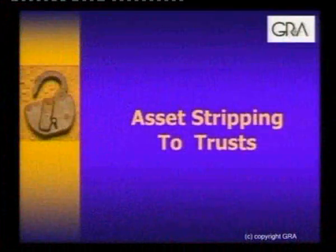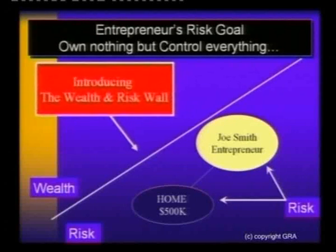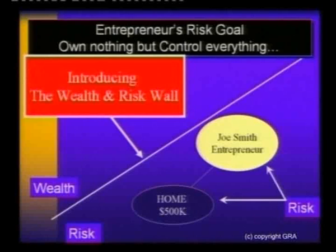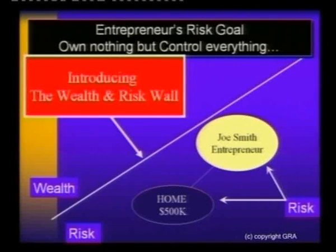What I want to do is spend a few minutes and go through asset stripping to trusts. The first thing we're going to do is introduce this concept of the wealth and risk wall. You can see this diagonal white line. On the left hand side we store wealth, and on the right hand side we carry risk. As individuals, you will always be on the right hand side — you can't avoid risk, you will always carry it. Therefore you store your assets on the left hand side.